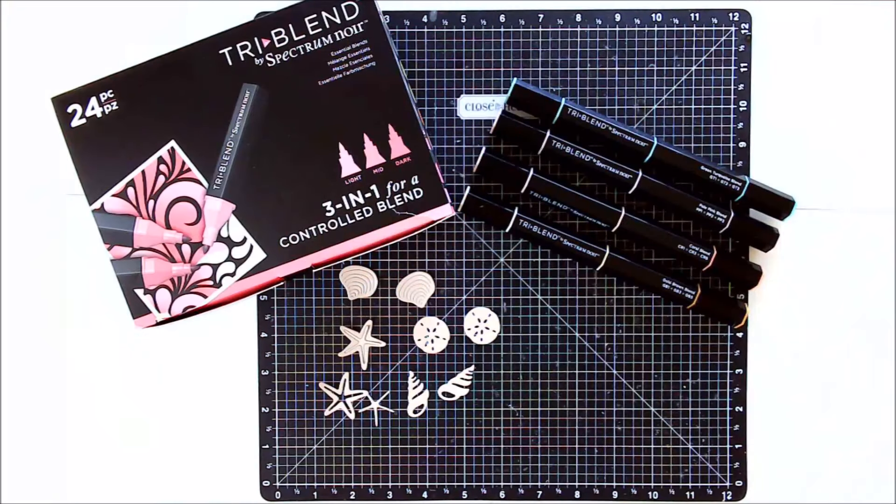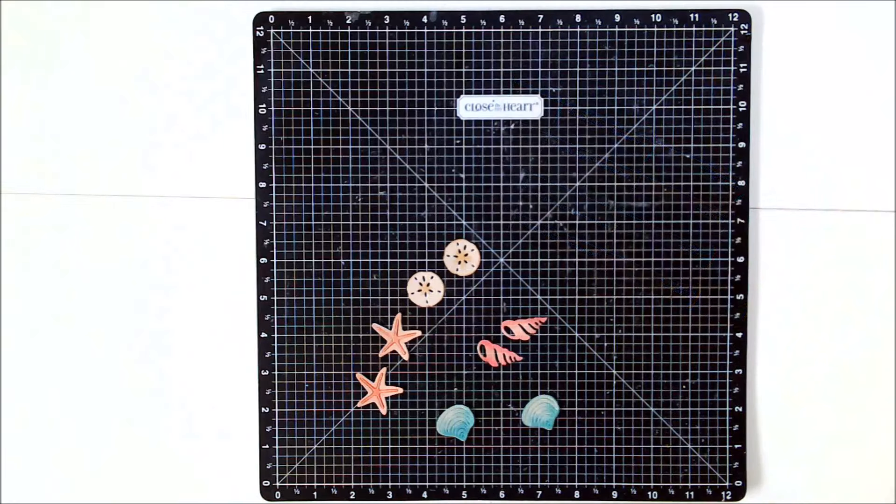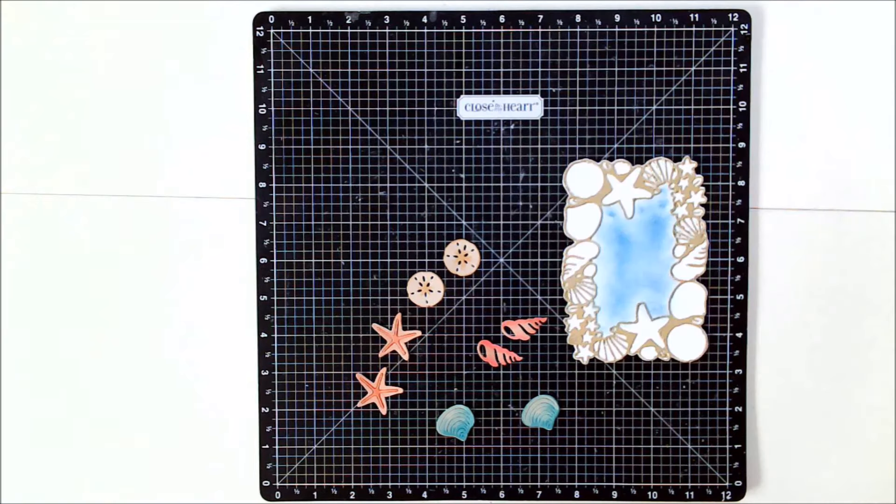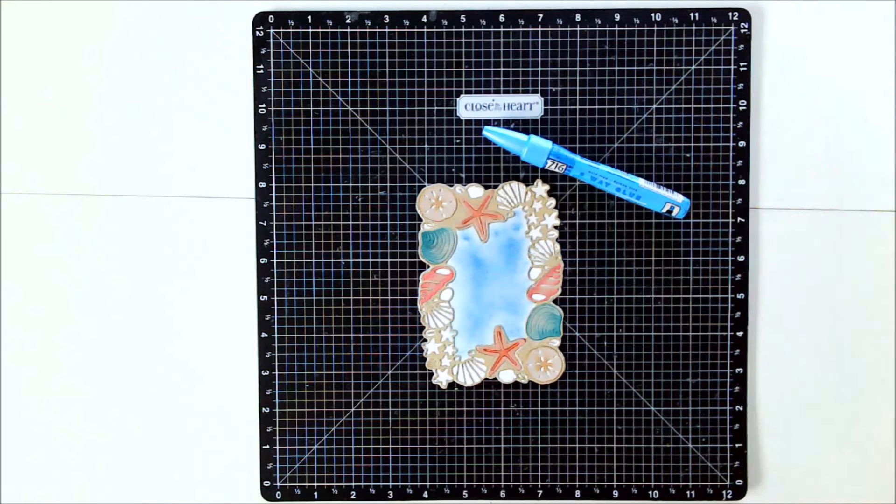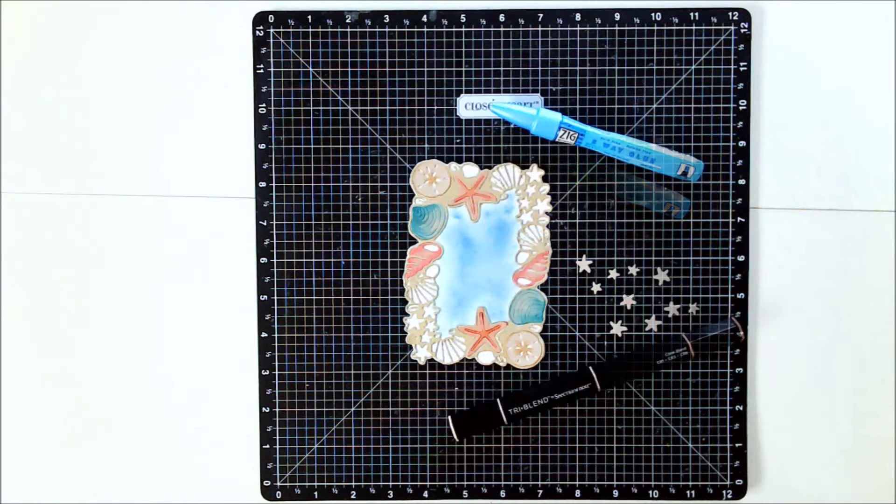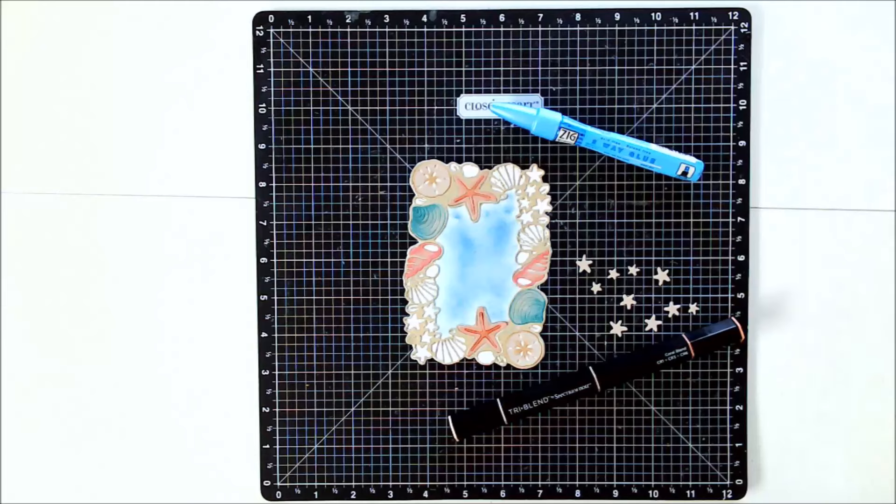And I'm also using those markers to color the die-cut pieces from that frame that I'm going to be inlaying back in. And you may have noticed that I had die-cut them from a pale beige color to get more of an earthy beach look after they're colored. And then I can layer them back into their places in that frame border.